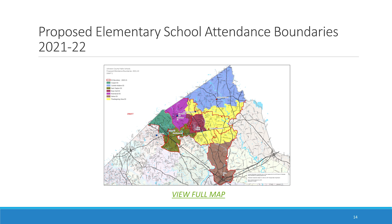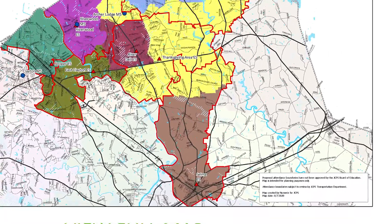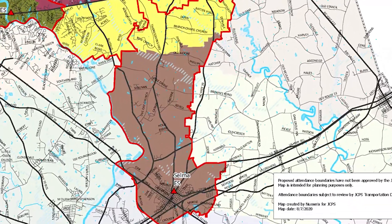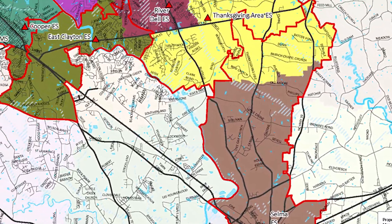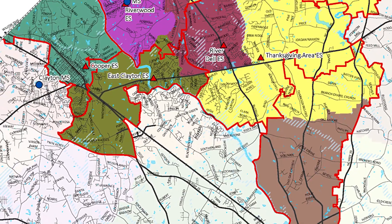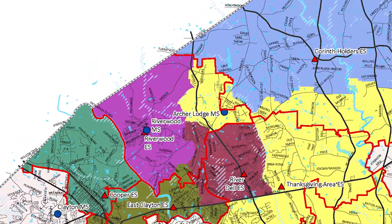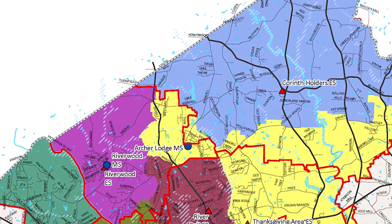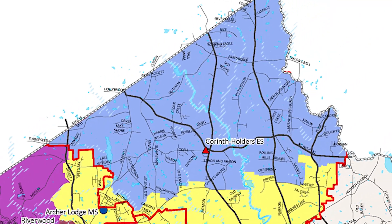You can use the link in slide 14 to view a detailed street level map of the proposed elementary school boundaries. The map includes the current elementary school boundary as a red line, and the proposed attendance areas have various colors.